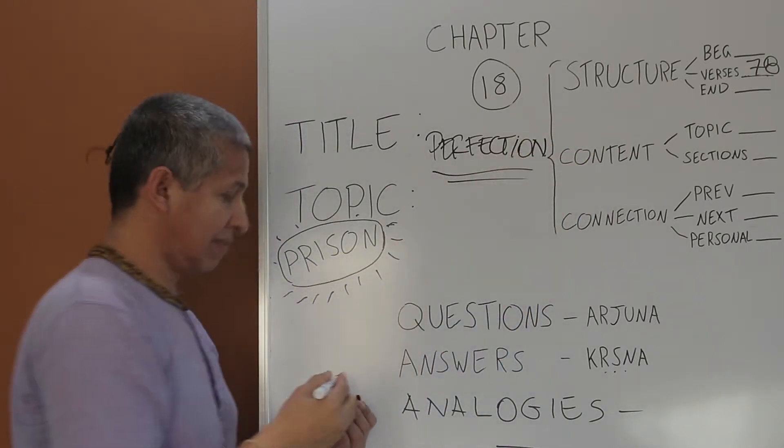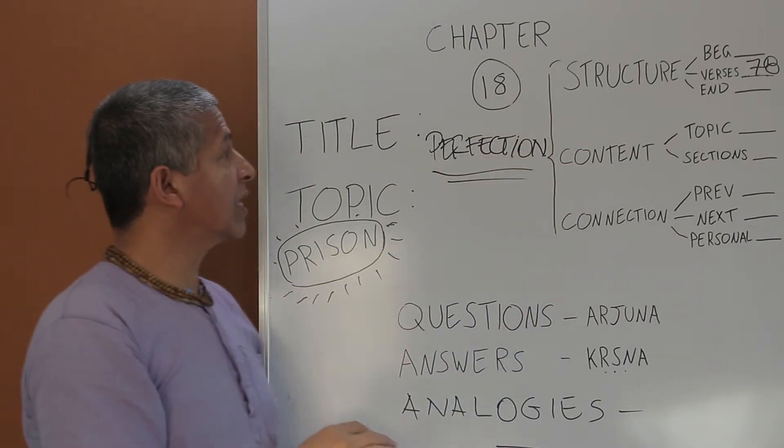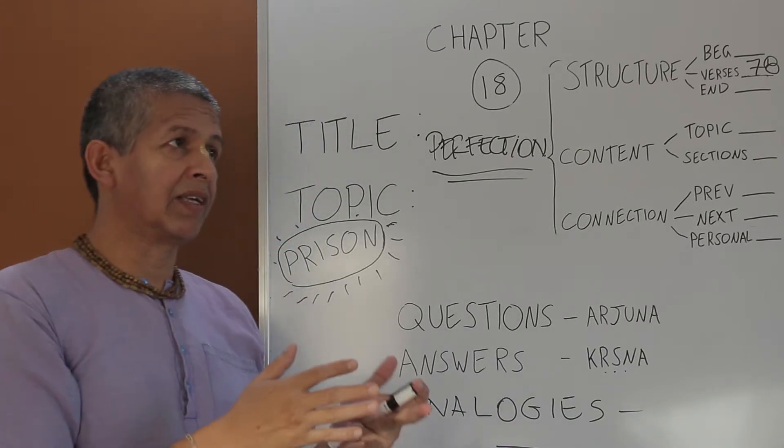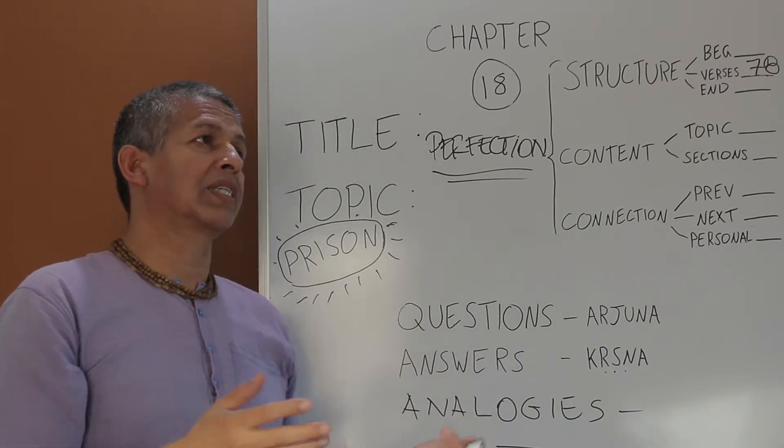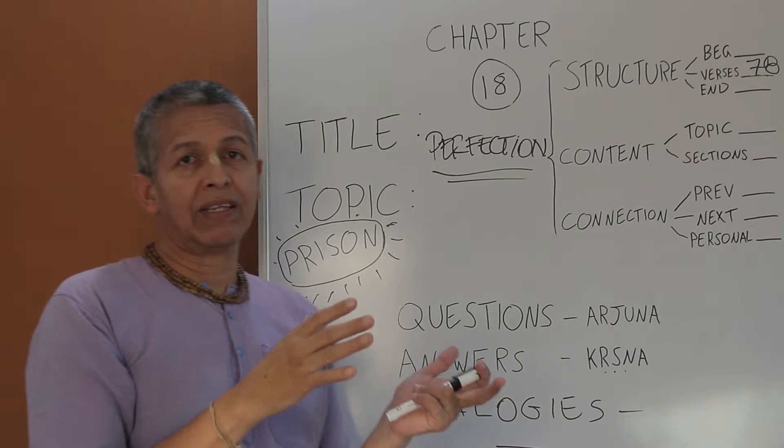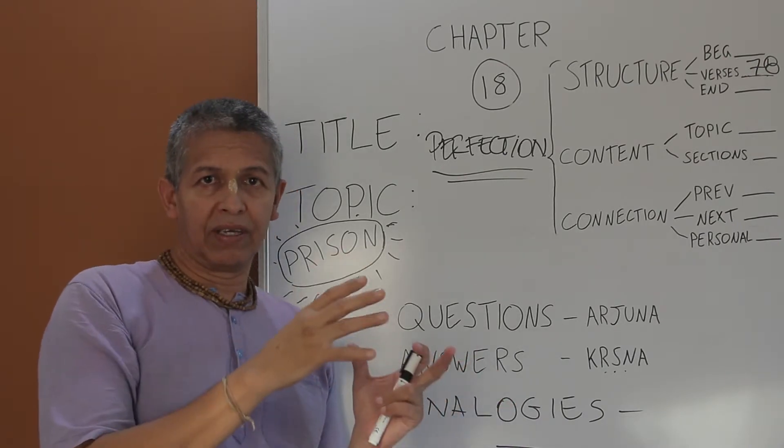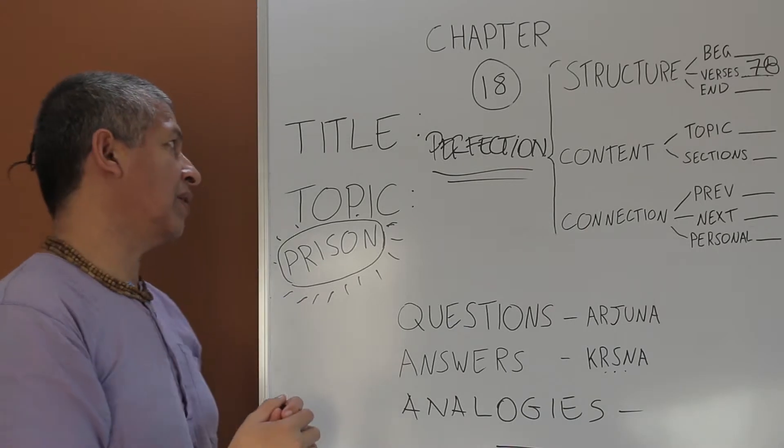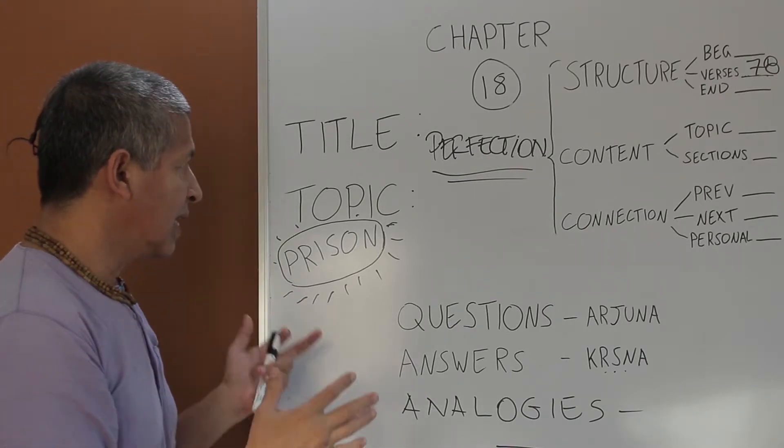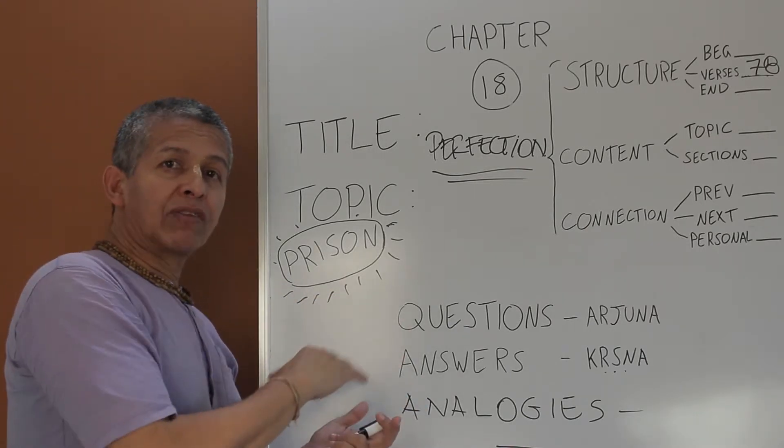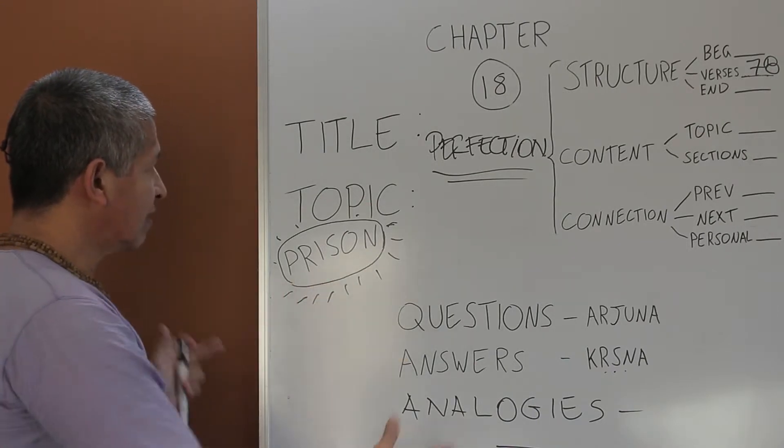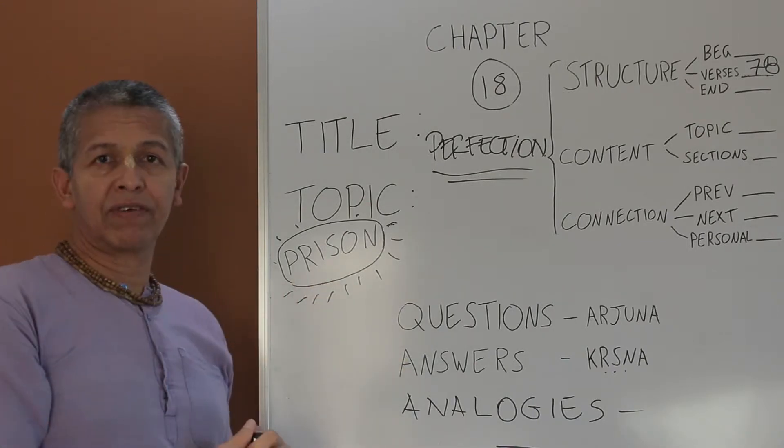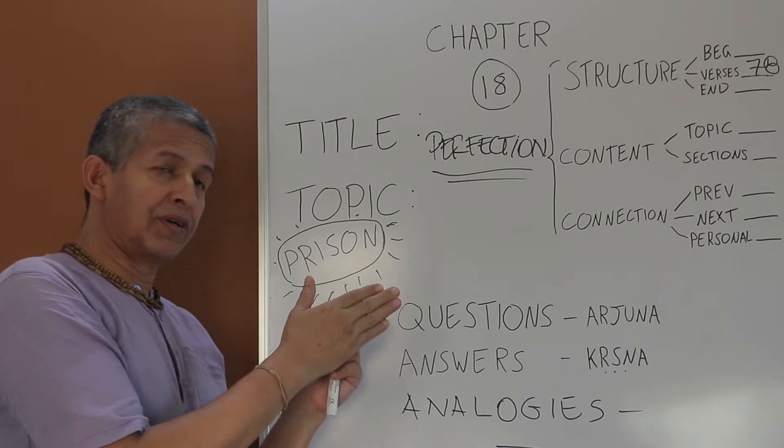So we have come to the last part, the last section, and as Srila Prabhupada explains, quoting Bhaktivinoda Thakura and other Acharyas, this chapter 18 is the summary. Chapter 2 is the summary and chapter 18 is the summary of the Bhagavad Gita. Now, first of all, let us go back to our context, to the analogy that we have given for the last section, chapter 13 to 18.